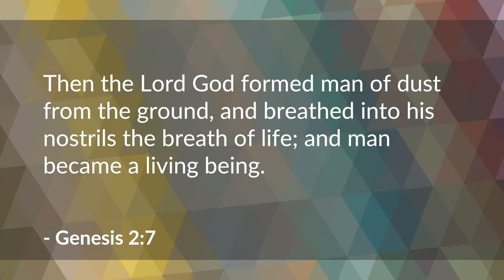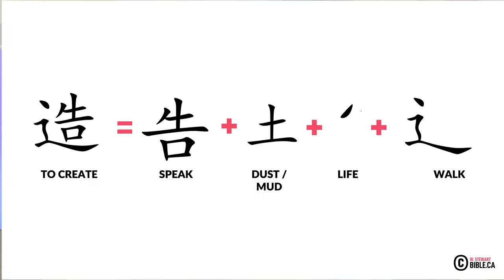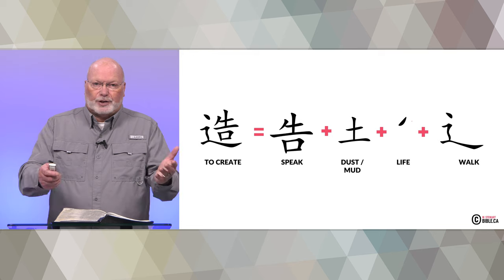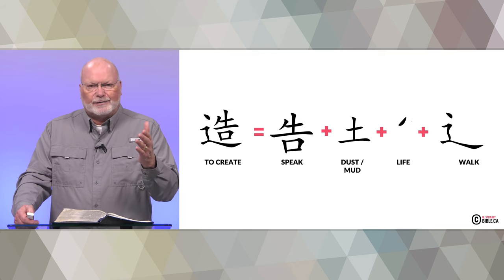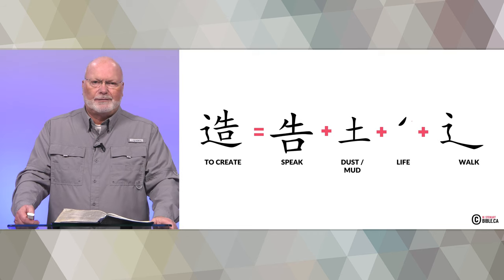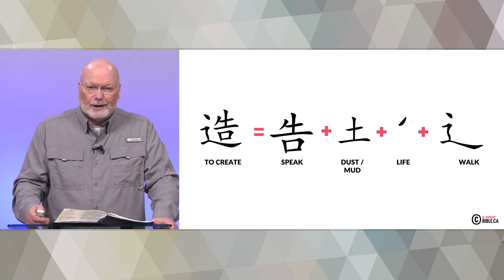The next character is for 'create.' Genesis chapter 2 verse 7 says: 'The Lord God formed man of dust from the ground, and breathed into his nostrils the breath of life, and man became a living being.' The symbol for 'create' is made up of characters representing speak, dust or mud, life, a small hash mark, and walk. These characters together mean 'to create' — God speaks into the dust, life, and that man walks — perfectly paralleling Genesis 2:7.